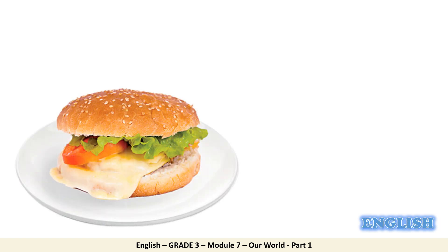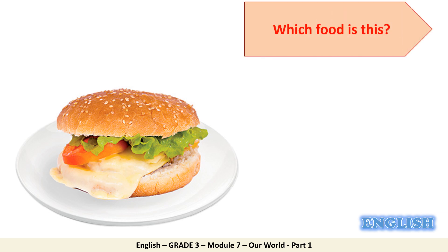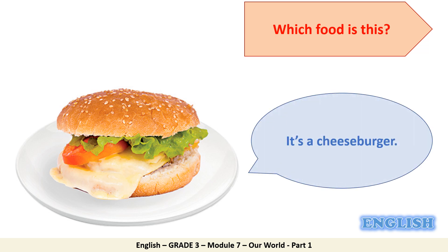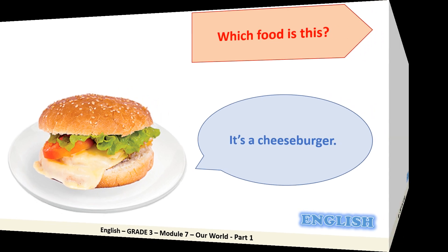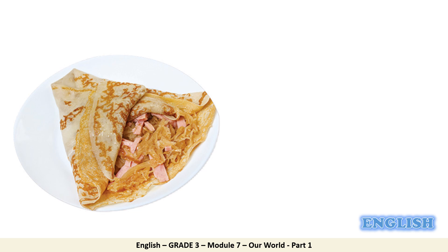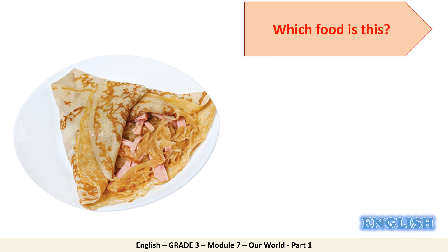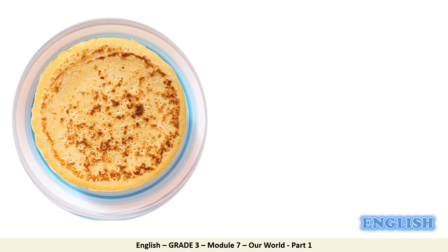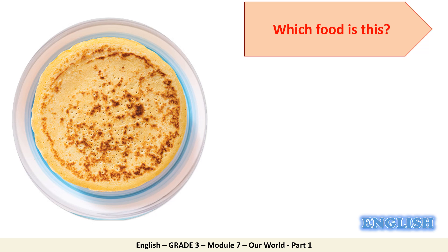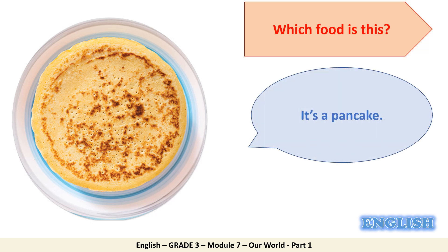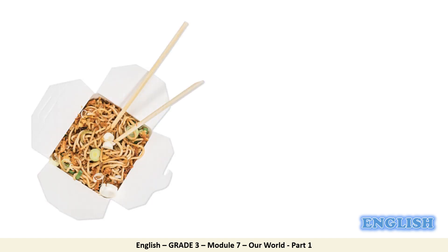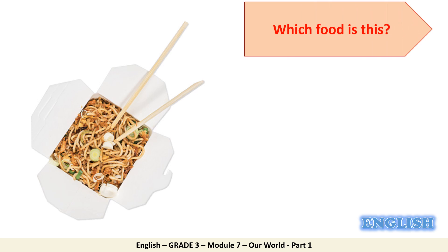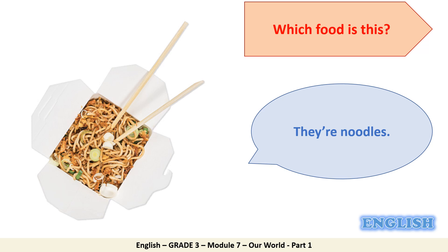I would like you to take a look at this picture. Can you tell me which food is this? Wonderful — it's a cheeseburger. Now take a look at this picture. Which food is this? Fantastic — it's a crepe. Now look at this picture. Can you tell me which food is this? Correct — it's a pancake. What about this? Can you tell me which food is it? Excellent — they're noodles.